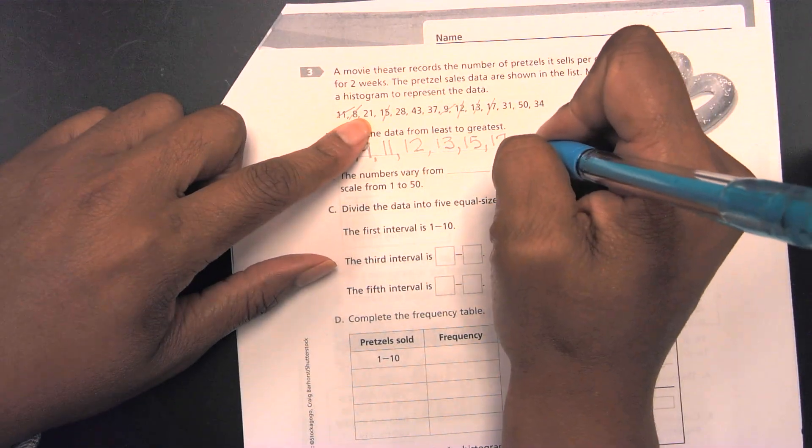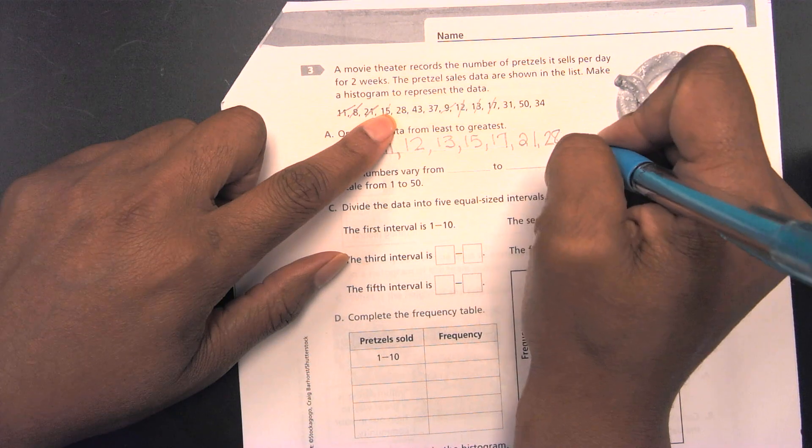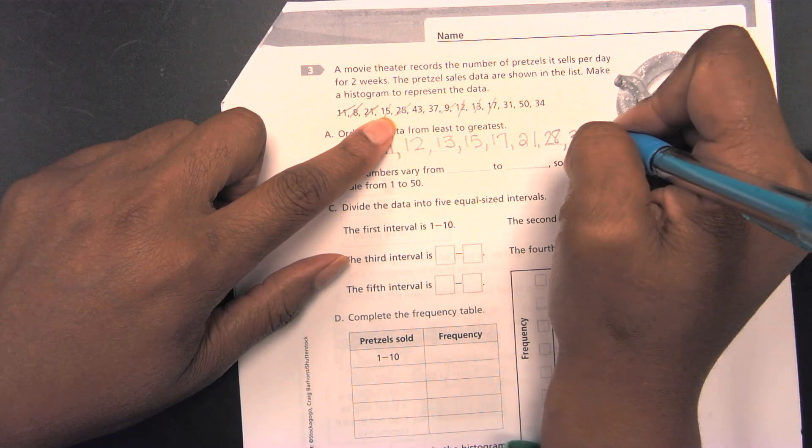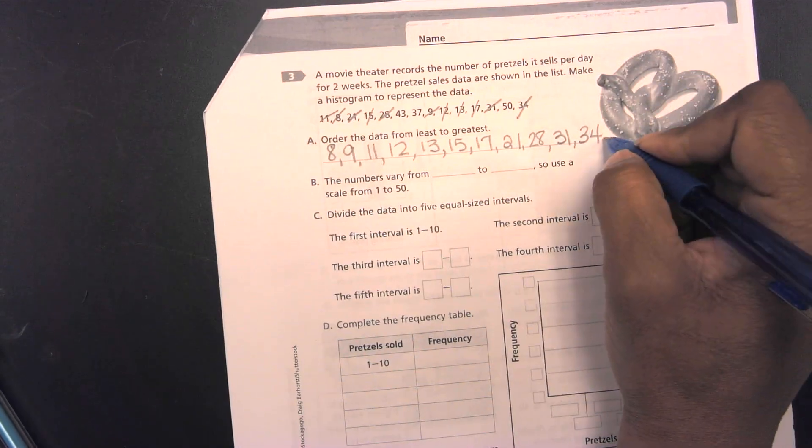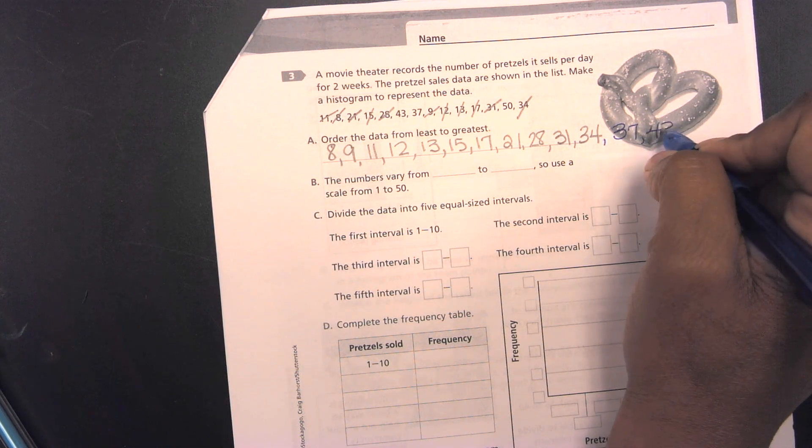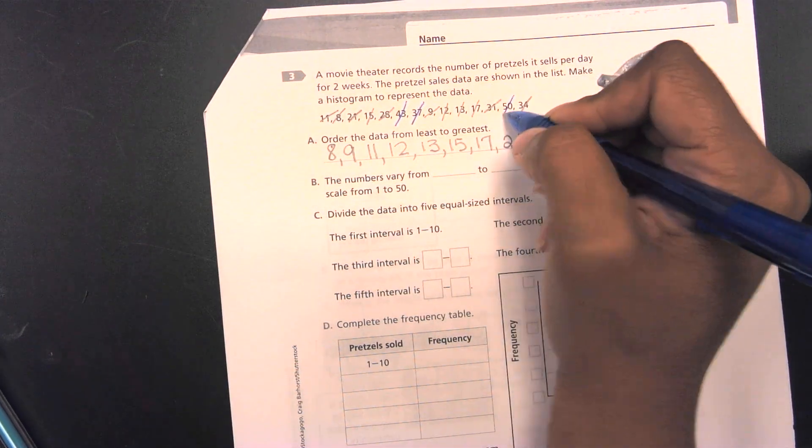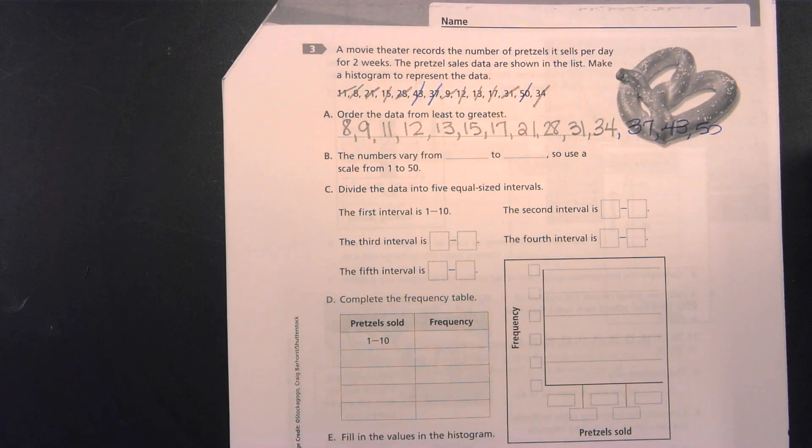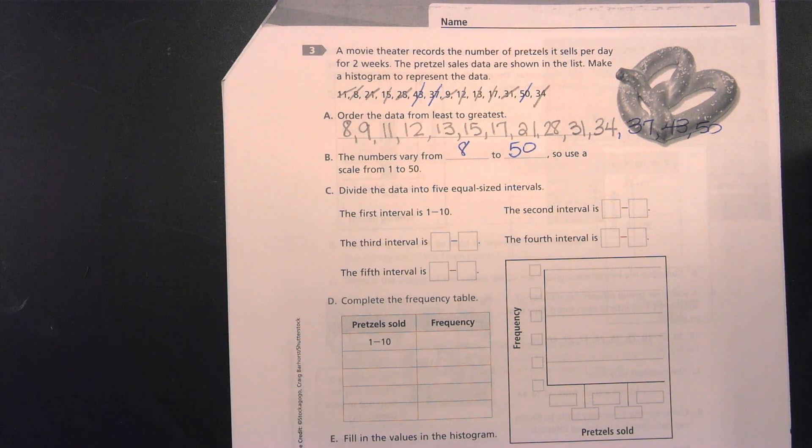So, if I'm not mistaken, it looks like the next number should be 21. After 21, it looks like it's going to be 28. Then, it's going to be 31, 34. It looks like 37, 43, and 50. So, 37, 43, and 50. Now, it goes on to say to you all, the numbers vary from, so what's the lowest number? What's the highest number? So, that's the variation of the numbers from 8 to 50.